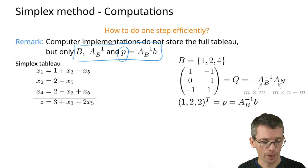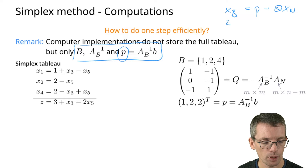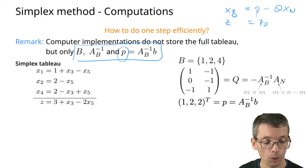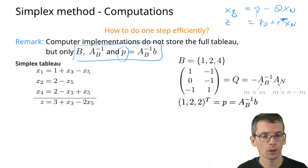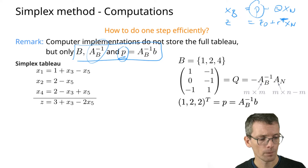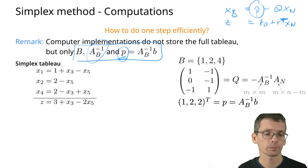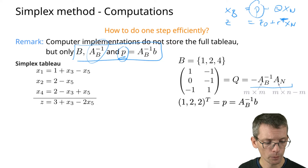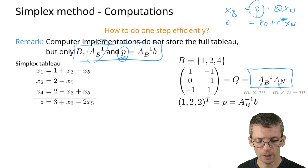As a reminder from the previous video, we write xB — the basic variables — as p plus Q times xN, and z as z0 plus r-transpose times xN. So we write the basic variables and the objective function in terms of the non-basic variables. We maintain p and the inverse of AB, where AB is A restricted to the columns of B. We can calculate Q from these quantities without doing so explicitly, since that would be too expensive.